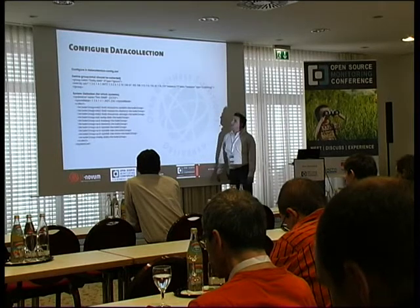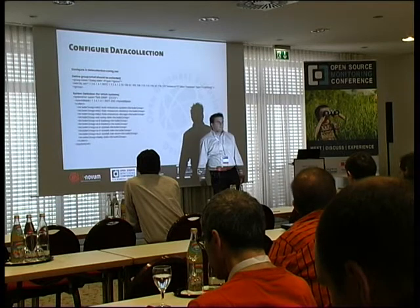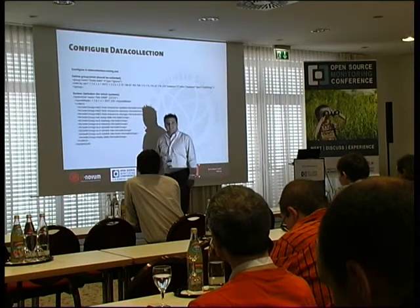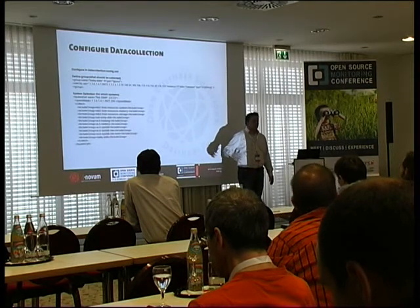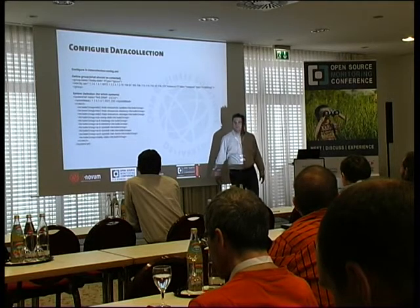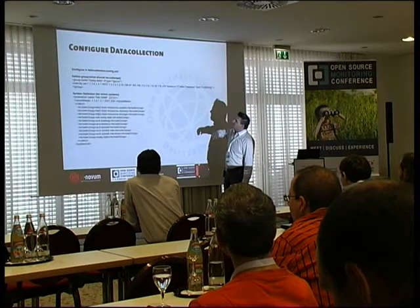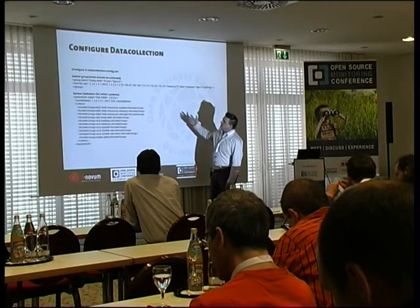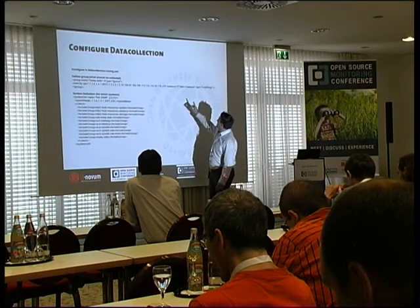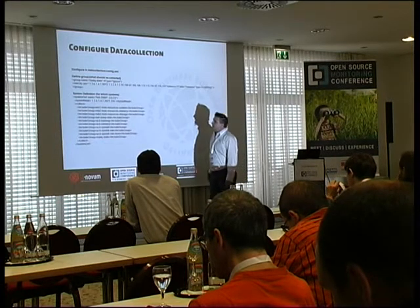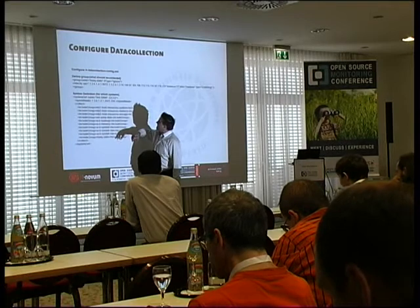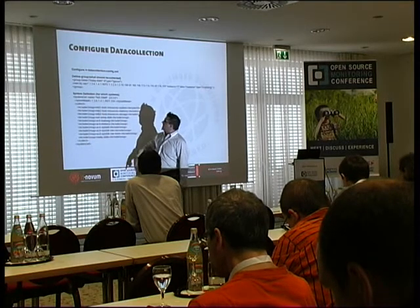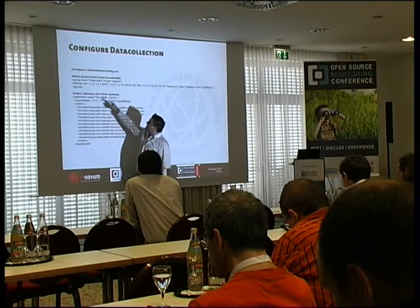Here you see the configuration of the data collection in OpenNMS. You can define the OID you want to gather, instance one — so you will get the first instance of the table, or just one value. You set the instance to one, give it an alias 'mail queue size', and then go to the system definition. OpenNMS will only collect for systems having this system object ID. So if the system has this system object ID, it will get the mail queue stats and graph it.